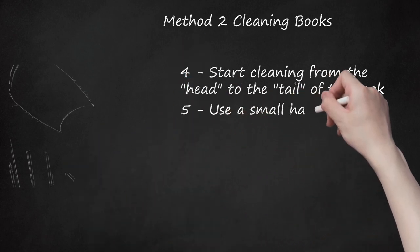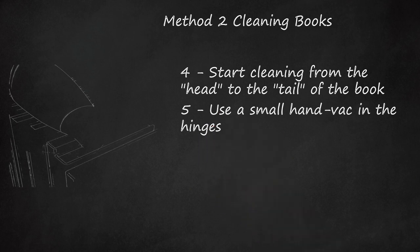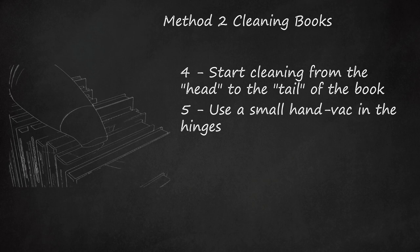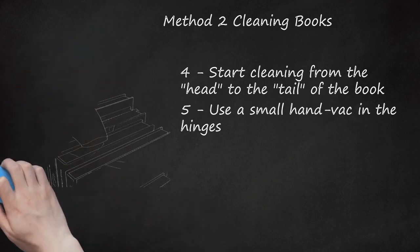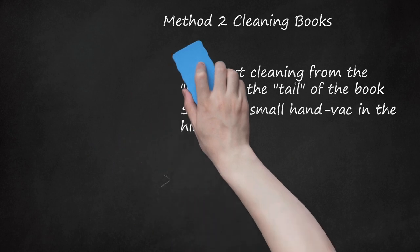Use a small hand vac in the hinges. If your books are very dusty, it may be good to use a small hand vac or the tube function on your regular vacuum cleaner to gently suck the dust out of the hinge in the binding. Run the vacuum over the top of the books while they're still stacked. This can be a good way to get the worst out of the way first.